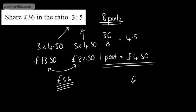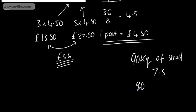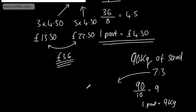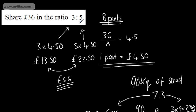For example, say we have 90 kg of sand and we need to split this into a 7 to 3 ratio. I can see I've got 10 total parts, so 90 divided by 10 gives me 9 — so one part equals 9 kg. The first pile has 7 parts: 7 times 9 gives 63 kg. The second pile has 3 parts: 3 times 9 gives 27 kg. Those clearly add back up to give 90. So when sharing, don't fall into the trap of saying there are two parts — share the quantity and then multiply by the number of parts.